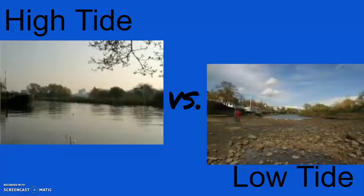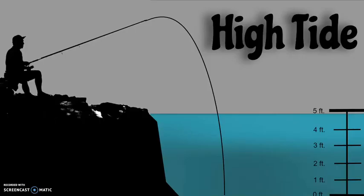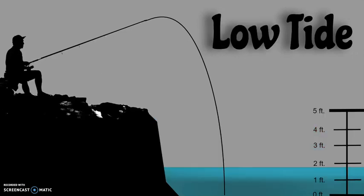There are two types of tides: high tide and low tide. High tide is when the average water level is higher, and low tide is when the water level is below average water level.